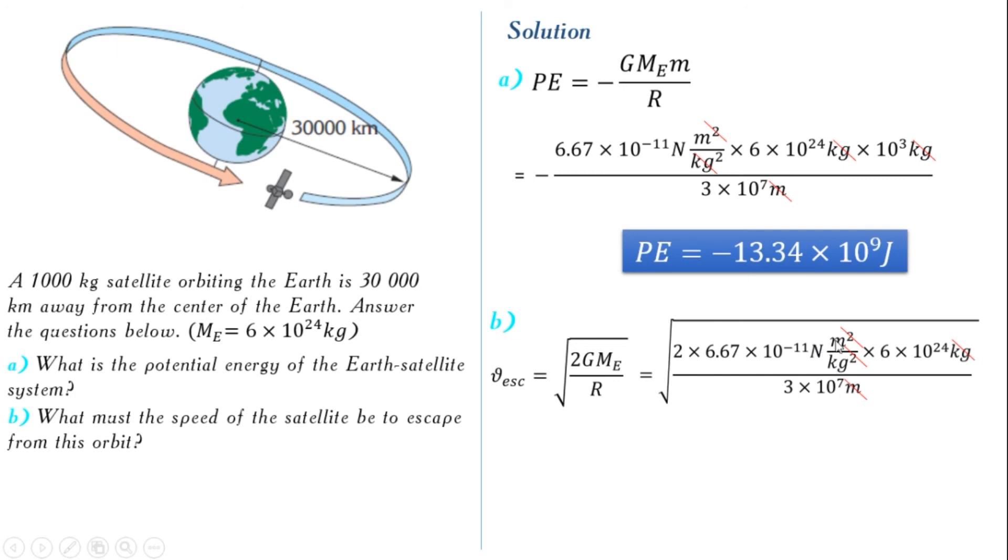Here we have meter times meter, meter square, and over second square. And after this calculation of these numbers, we get in square root 26.68 times 10 to the power of 6 as unit meter square over second square. And this number goes out of the square as our answer. Velocity escape speed, 51.65 kilometers per second. So our satellite must have this speed in order to escape from the orbit.